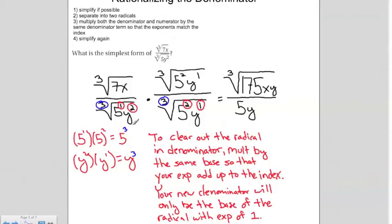To emphasize how to rationalize the denominator: to clear out the radical in the denominator, multiply by the same base so that your exponents add up to the index. Your new denominator will only be the base of the radical with exponent 1. Here I had base 5y with exponents 1 and 2, therefore I'm multiplying by the same base 5y but with exponents 2 and 1 so that my exponents add up to my index. What's left will just be the base of the radical, which is 5y.